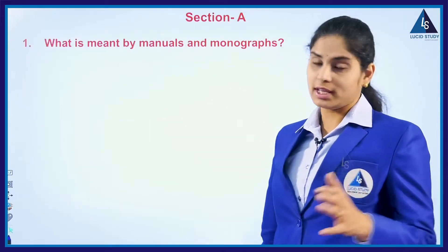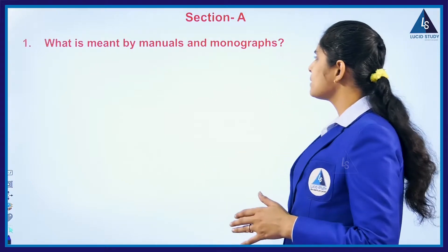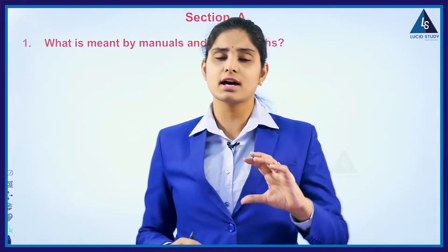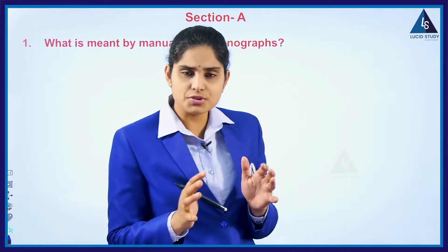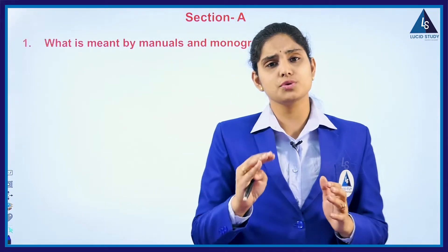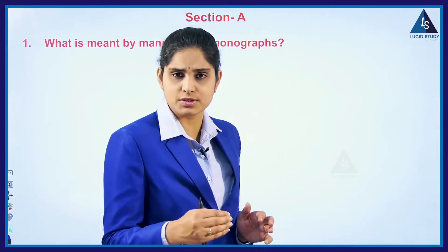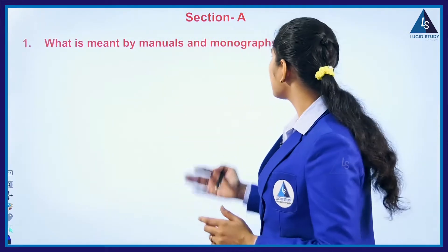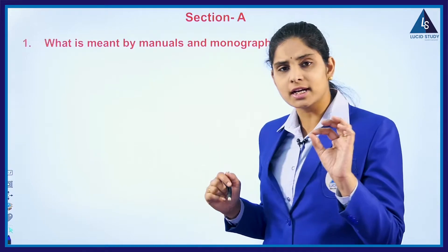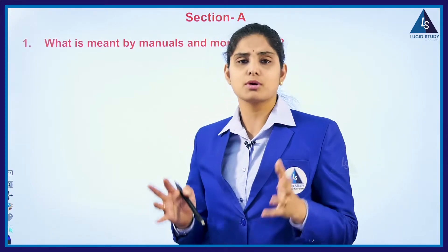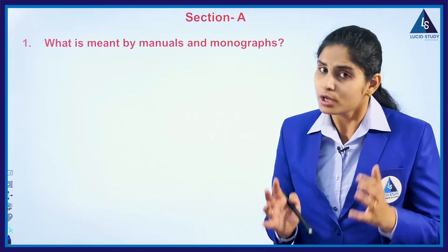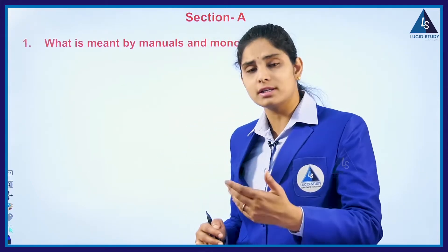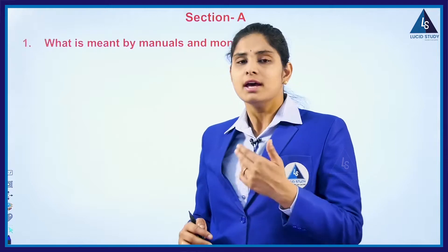Under section A, the first question is: what is meant by manuals and monographs? Manuals are specific books used for ready reference purposes. Monographs are books that contain complete information about a species or a specific group, and they even include newly discovered species.